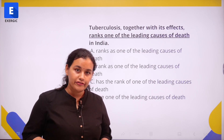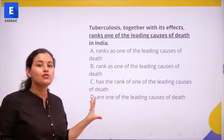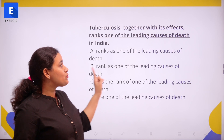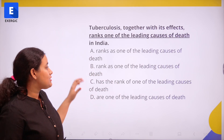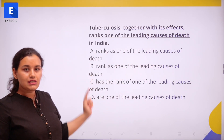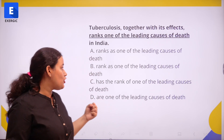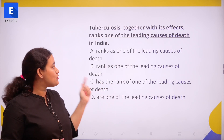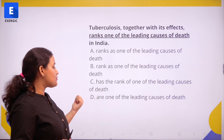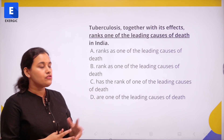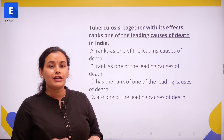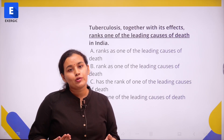Coming back to our topic of connective phrases, let us look at another previous year GATE question. Tuberculosis together with its effects ranks one of the leading causes of death in India. This is a sentence correction question where we need to replace the underlined phrase with one of the options to make the sentence grammatically correct. The options are: ranks as one of the leading causes of death, rank as one of the leading causes of death, has the rank of one of the leading causes of death, and are one of the leading causes of death.